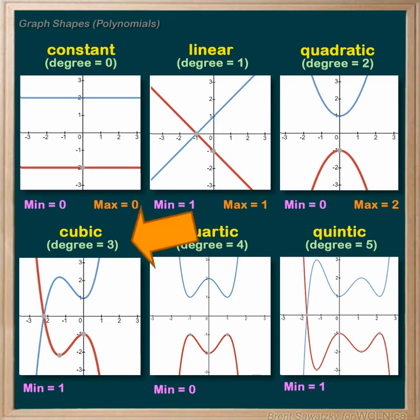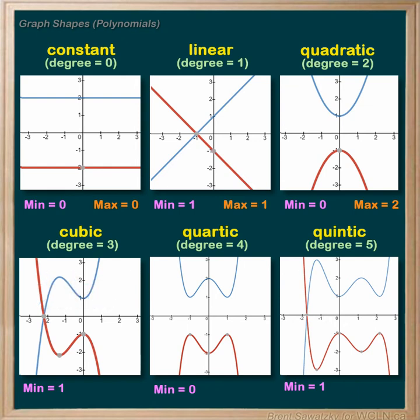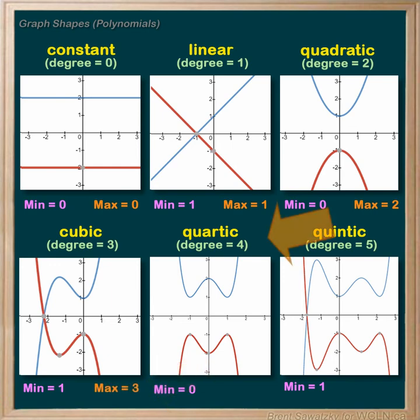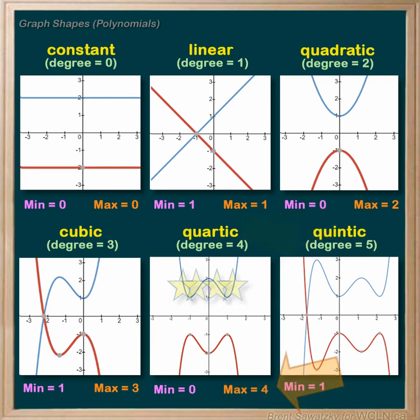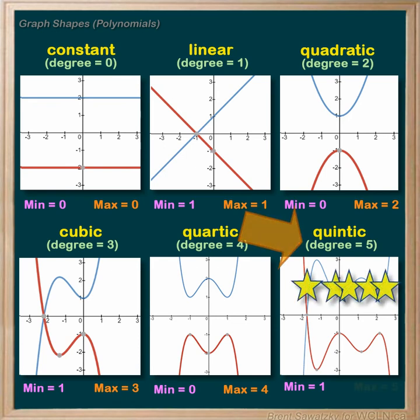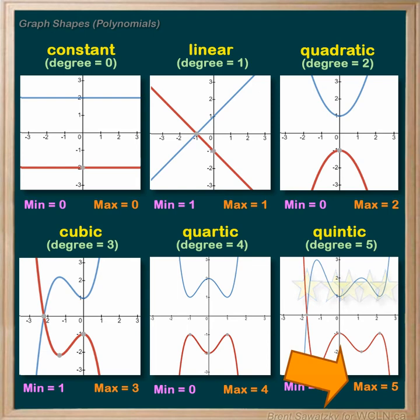A degree of three, cubic, can have up to two bumps or changes in direction, so it could cross the x-axis up to three times — a maximum of three solutions. A degree of four, quartic, has a maximum of four solutions, and a degree of five, quintic, has a maximum of five solutions. The maximum number of solutions in a polynomial relationship equals the degree of that relationship.